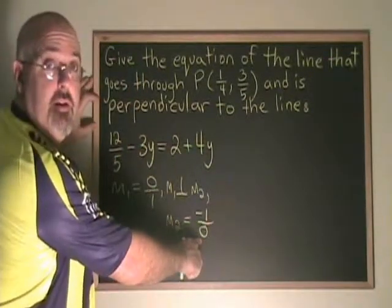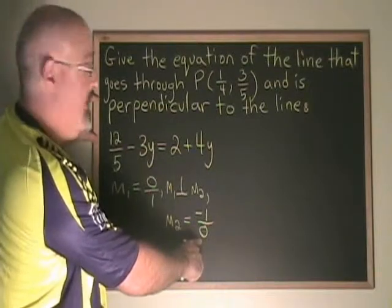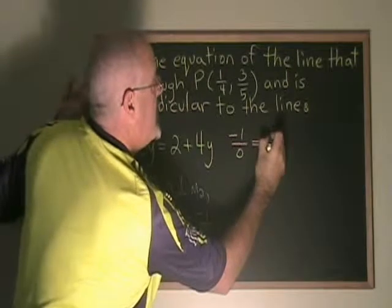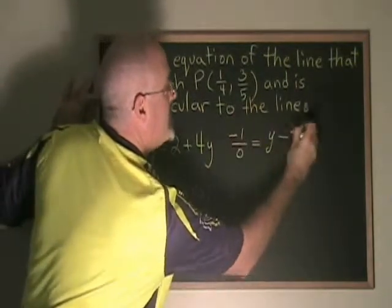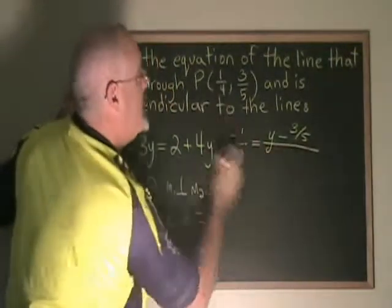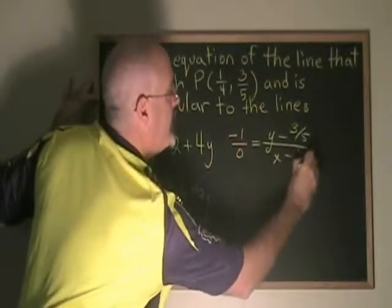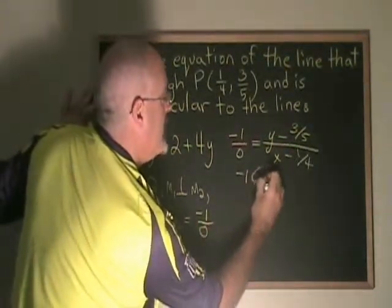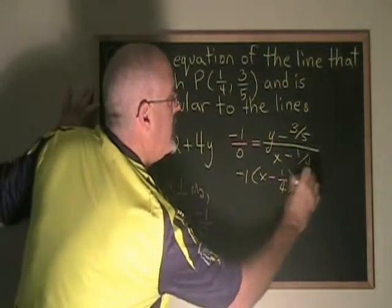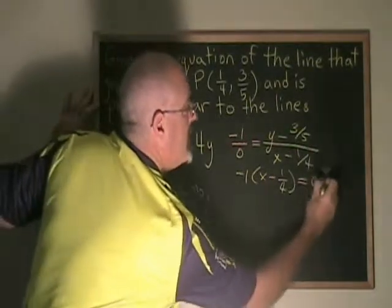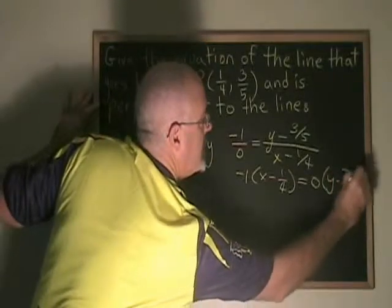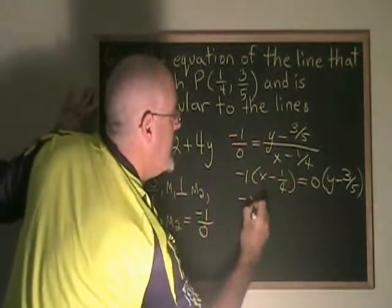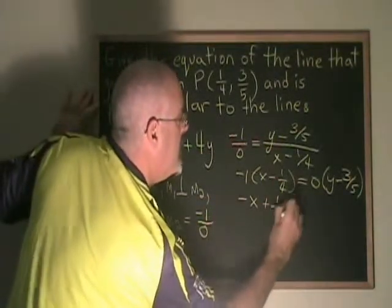Now, this fraction is undefined, but we can still use it to derive our equation. Negative 1 over 0 is equal to y minus 3 fifths over x minus 1 quarter. Cross multiplying, negative 1 times x minus 1 quarter will be equal to 0 times y minus 3 fifths. Of course, 0 times anything is 0. So this becomes negative x plus 1 quarter equals 0.